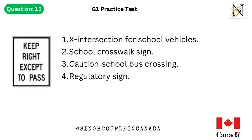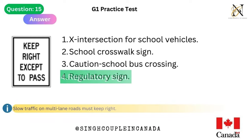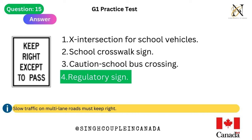Question 15. This traffic sign means: 1. X-intersection for school vehicles. 2. School crosswalk sign. 3. Caution school bus crossing. 4. Regulatory sign. Answer is 4. Regulatory sign — slow traffic on multi-lane roads must keep right.